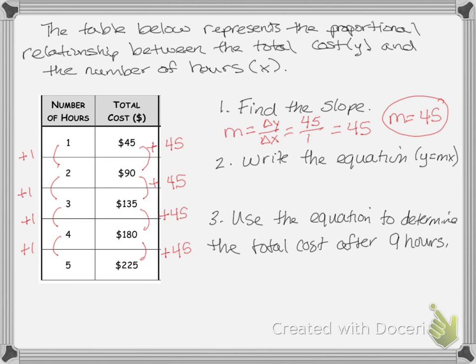Now I need to use that slope to write the equation: y equals 45x. We're being asked to use the equation to determine the total cost after 9 hours. Hours is x, so we put 9 in place of x: y equals 45 times 9. Multiplying, y equals 405. So the total cost after 9 hours is $405.